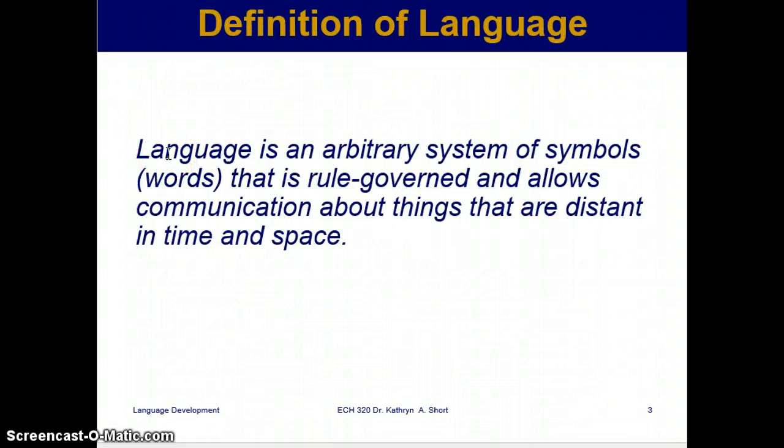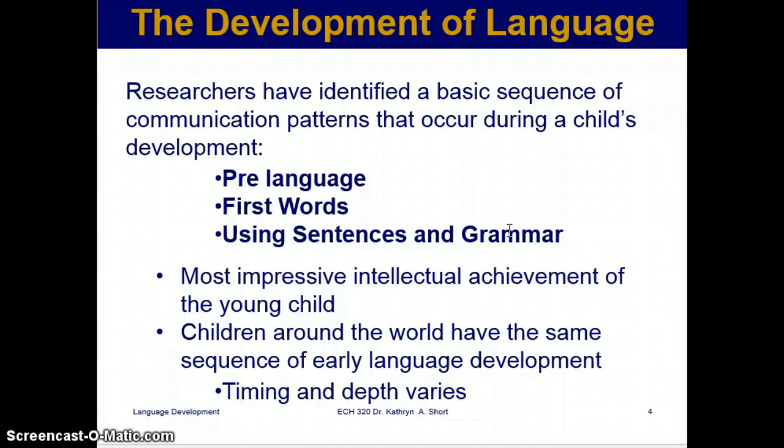The formal definition: language is an arbitrary system of symbols — words — that is rule-governed and allows communication about things that are distant in time and space. To keep it simple: language is a rule-governed system of symbols that allows communication.